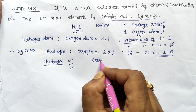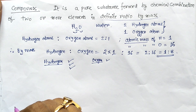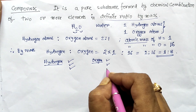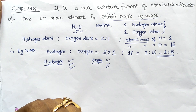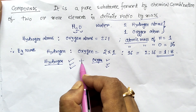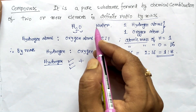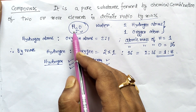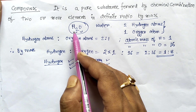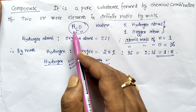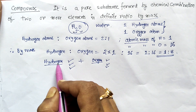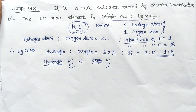Oxygen is a supporter of combustion, is non-combustible itself, and is useful for breathing. When hydrogen and oxygen combine, they form water. Water is not a combustible substance, is not a supporter of combustion, and is not useful for breathing. So the properties of hydrogen and oxygen atoms are lost during the formation of the compound.